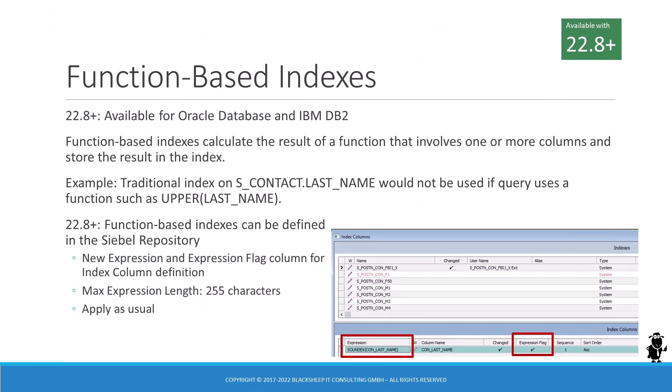As the Oracle database documentation tells us, a function-based index computes the value of an expression that involves one or more columns and stores it in the index. Function-based indexes have been used by DBAs ever since they became available to optimize query and sorting performance in databases. In Siebel CRM, schema objects such as tables or indexes must be defined logically in the repository first, and then applied to the database physically. Until 22.7 or earlier, this did not include function-based indexes.